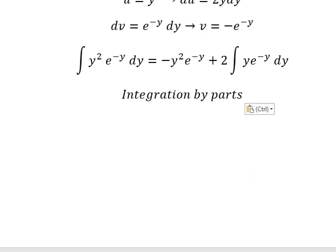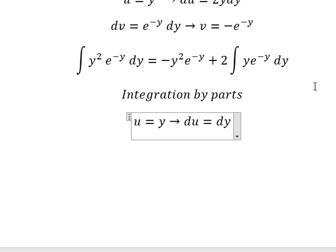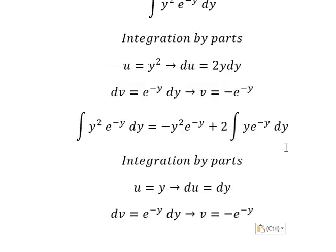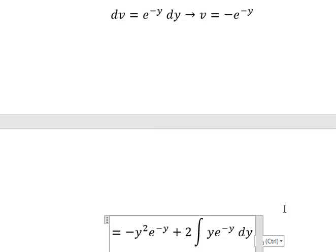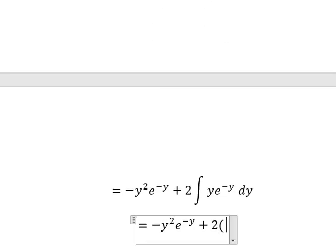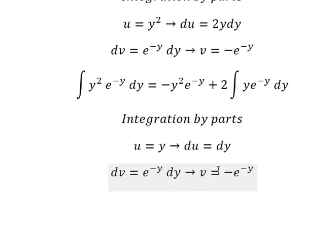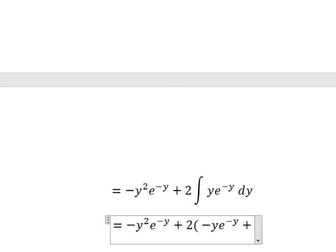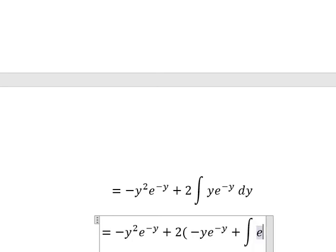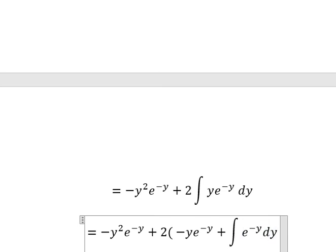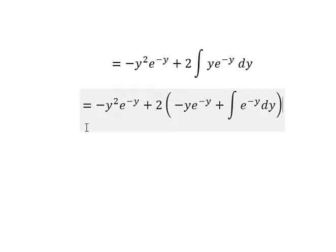Now we can use another integration by parts again. We let u equal y, then we differentiate both sides and get du equal to dy. We keep dv the same. So we have u multiplied by v, minus the integral of v du — negative times negative gives positive — and now we have the integration of e to the power of negative y, giving us the final answer.